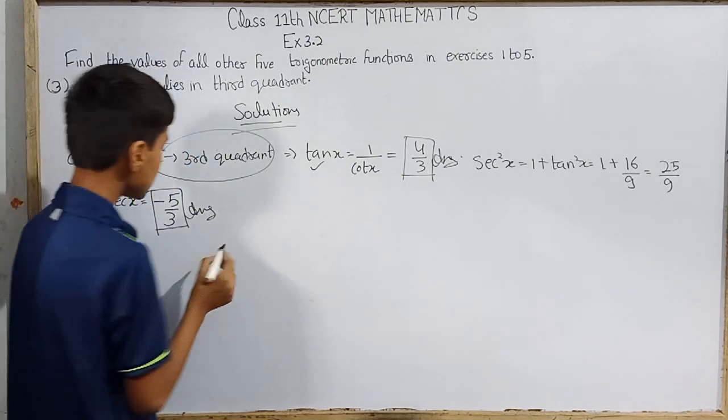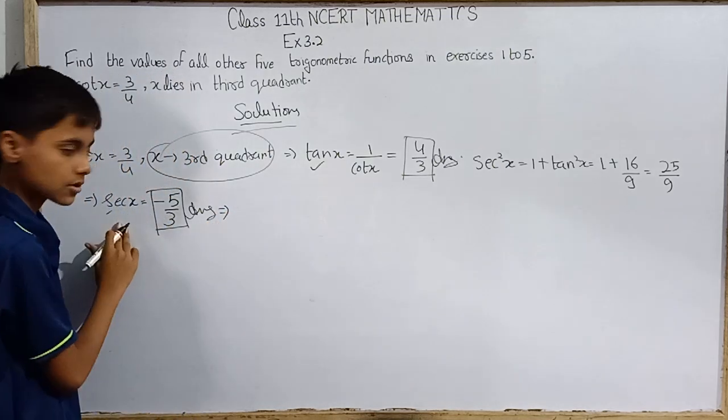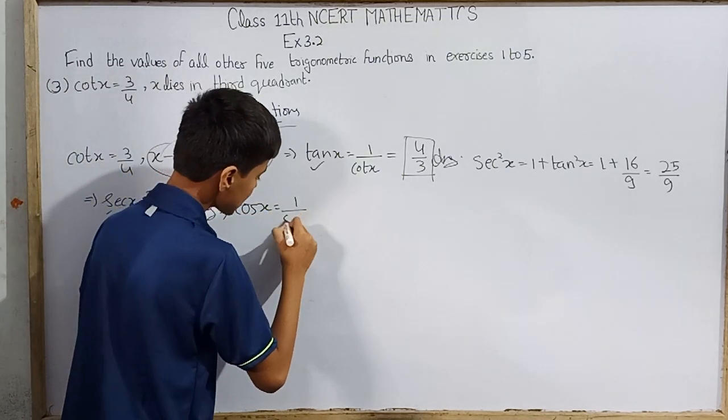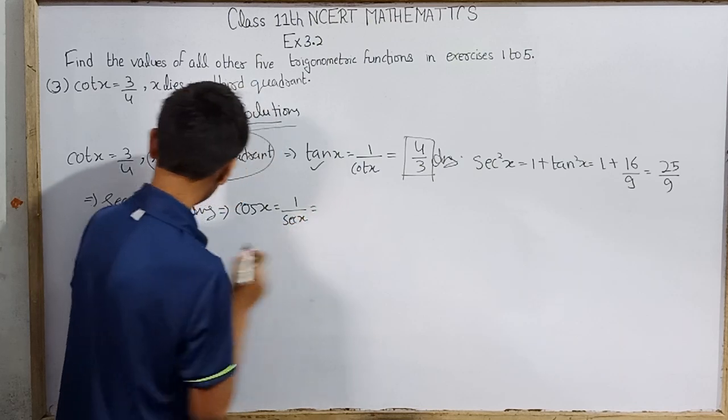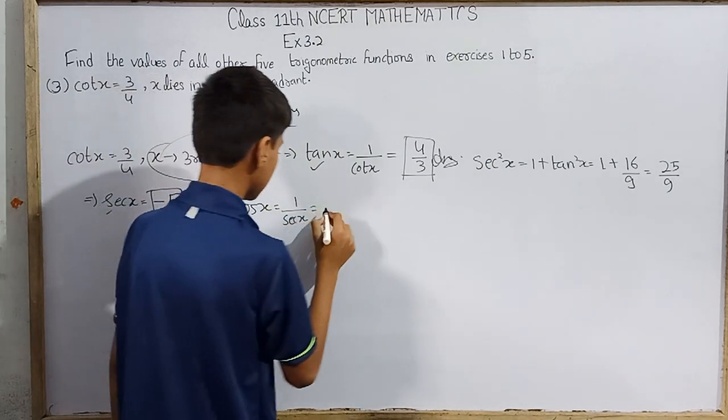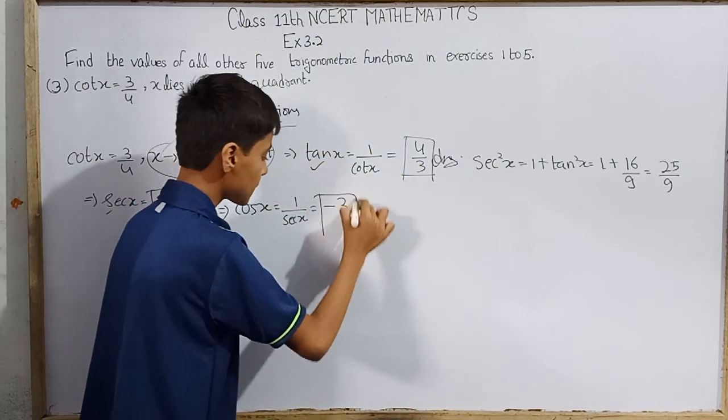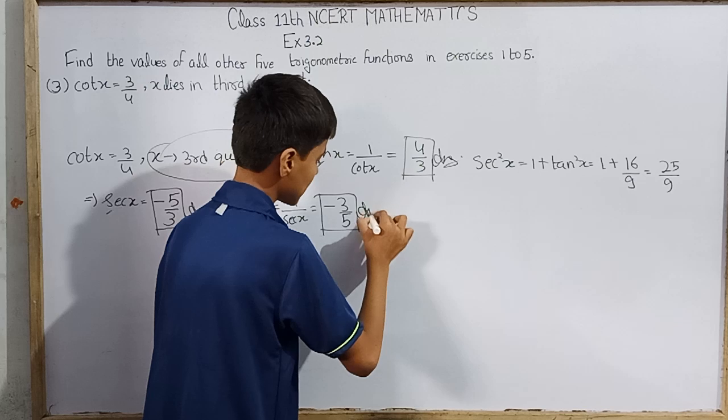So we can see that cos(x) is 1 over sec(x). Then this will also be negative, but this will be the reciprocal of sec(x), which means minus 3/5. This will be the cos(x) value.